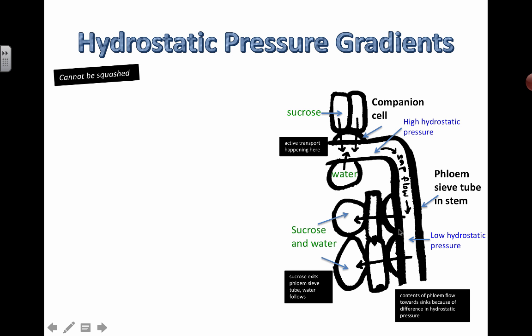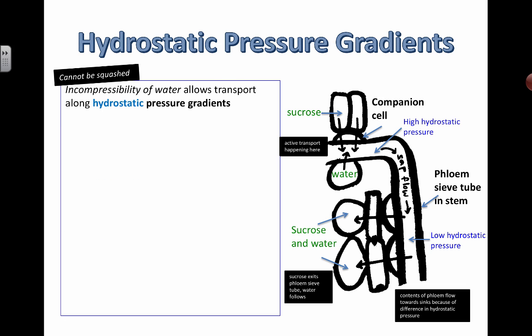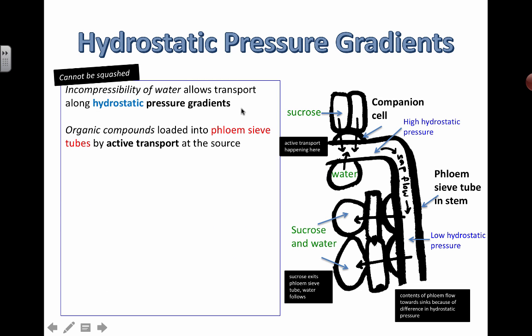Let's take a look at this hydrostatic pressure gradient. This might look a little bit confusing, but if you follow the concept of osmosis, everything should be fine. Water is incompressible - it means it can't be squashed. You can try this with a syringe filled with gas and you can squash it, but if you fill it with water, you can't actually squash it. It's one of the properties of liquids - it can't be compressed. It can change shape, but it can't be compressed. And if you can't compress it, then you can actually build up these pressure gradients, and we're going to call them hydrostatic pressure gradients because water is involved here.